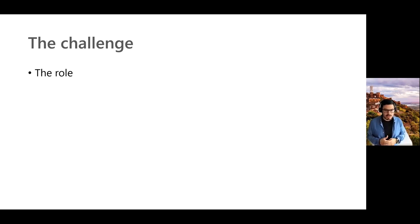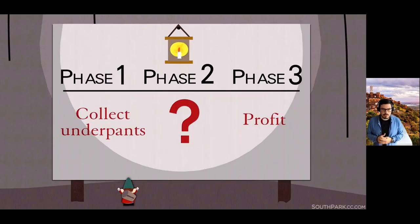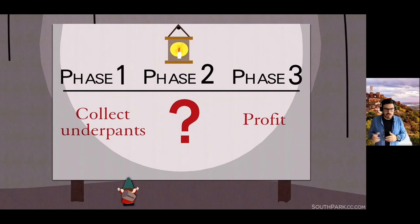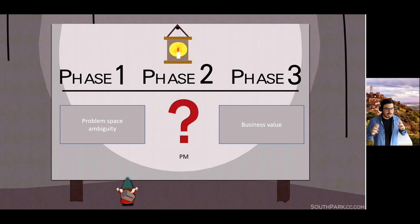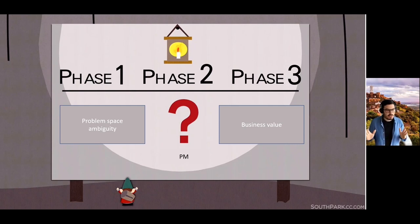I'll use an analogy I borrowed from a friend — the underpants gnomes from South Park, who have a three-phased master plan: phase one, collect underpants; phase two, question mark; phase three, profit and world domination. I think most schools of thought would agree: there is some problem space, some ambiguity somewhere. A PM comes in, rallies resources from many different teams and backgrounds, and together they collectively transform that problem space and ambiguity into business value. That phase two is where the magic happens.